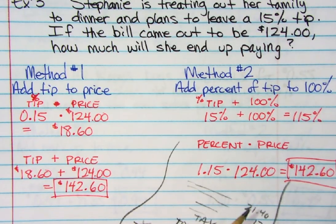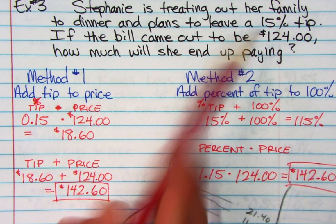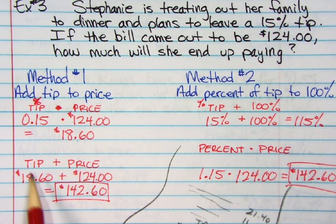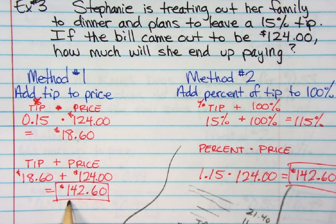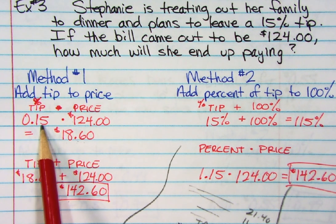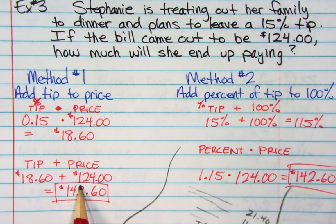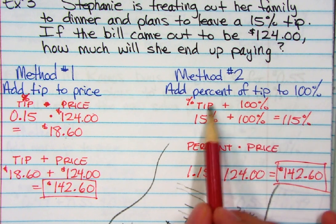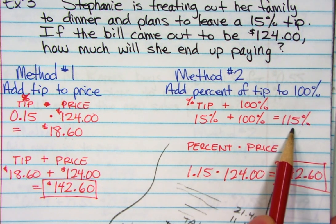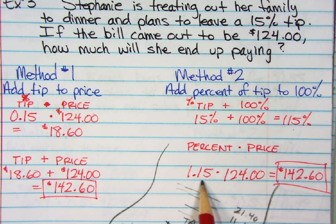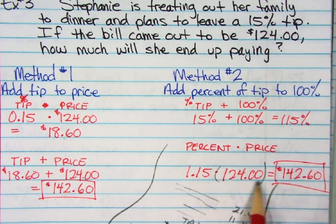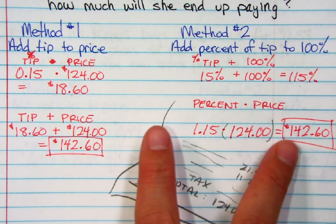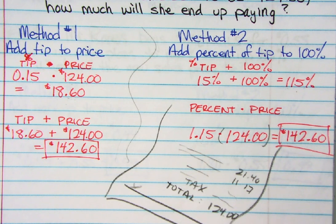Method one — add the tip to the price: 15% tip is 0.15, times $124, equals $18.60. Add $18.60 to $124 and you end up with $142.60. Method two — add the percent to 100 ahead of time: 100% for the food plus 15% for the tip equals 115%. Move the decimal two times to get 1.15, multiply by $124, and you end up with $142.60 — the same exact amount either way. You can choose whichever method makes more sense to you.